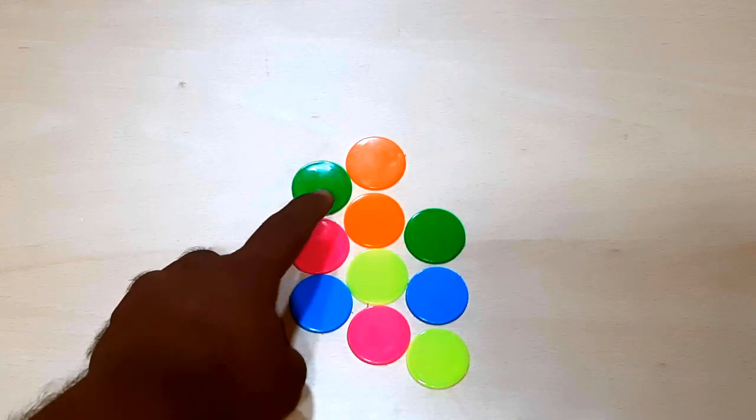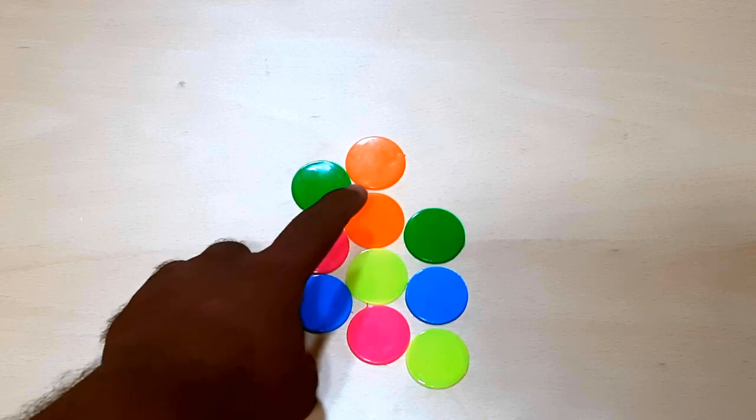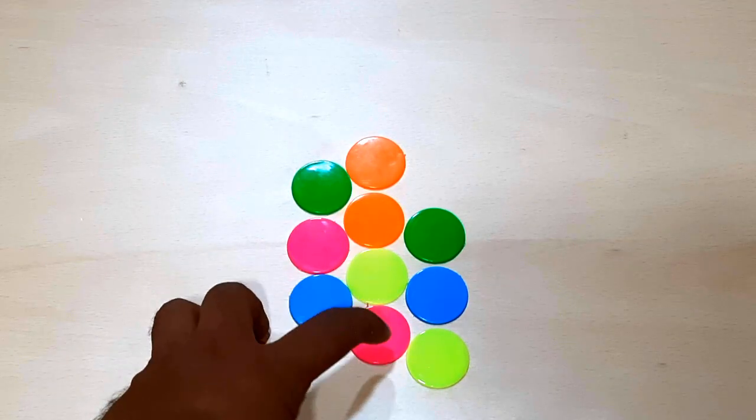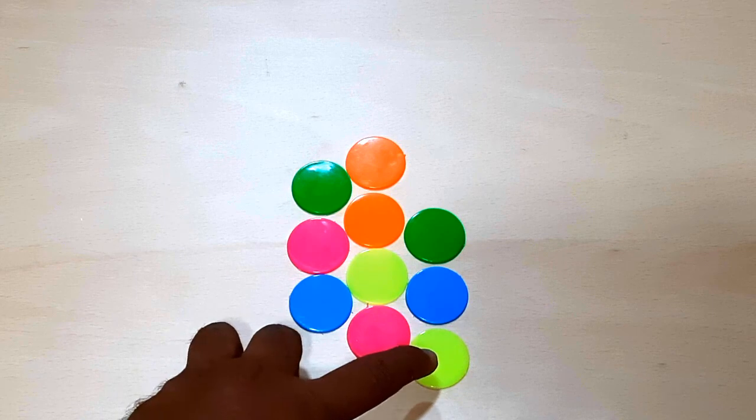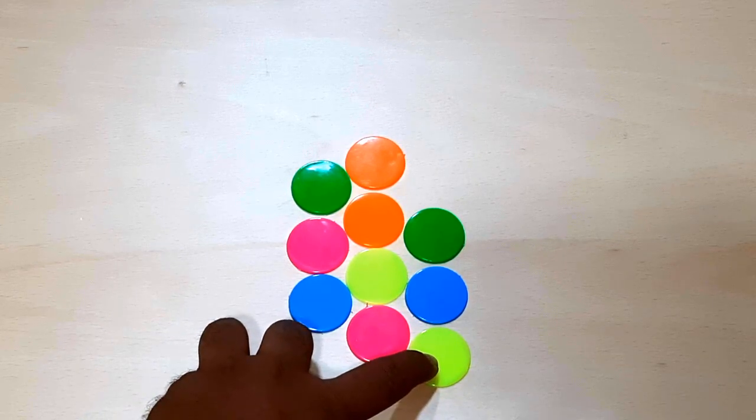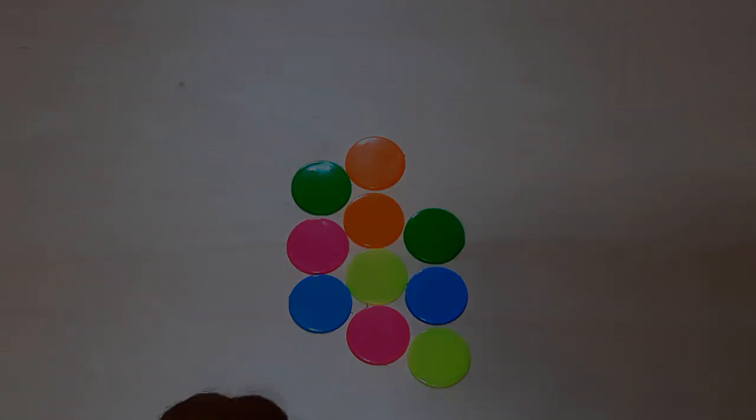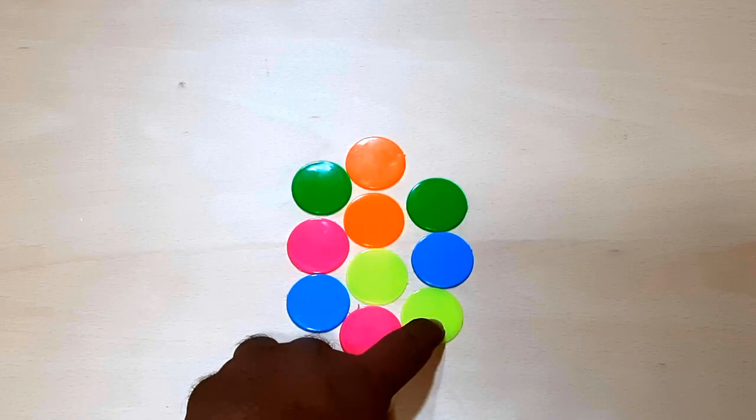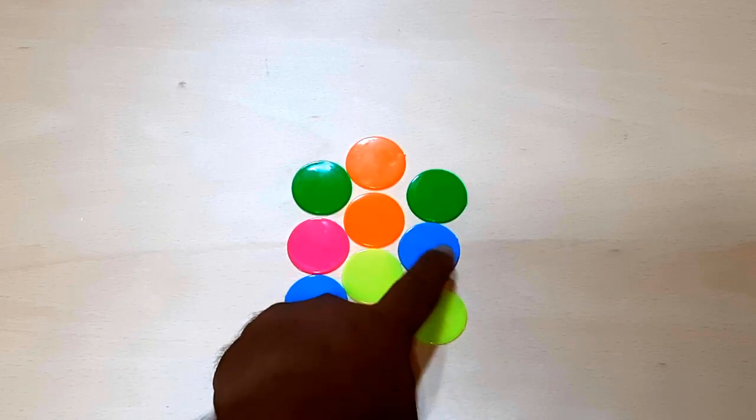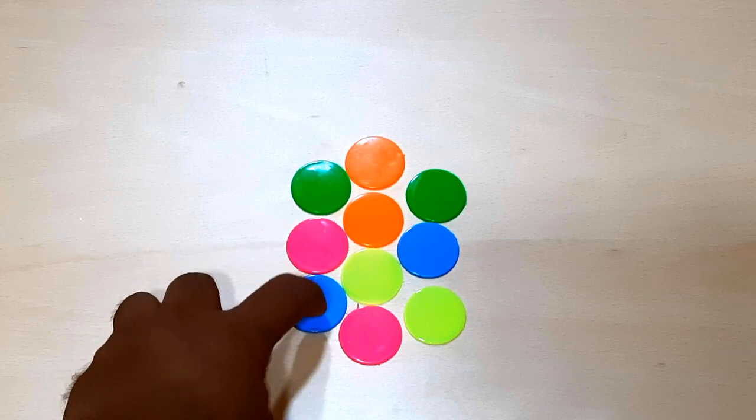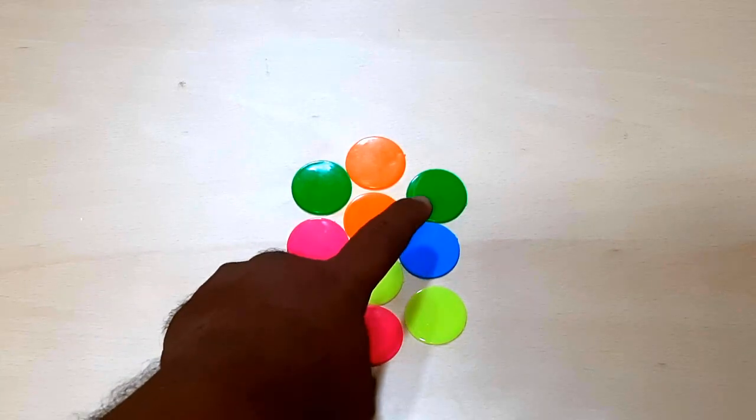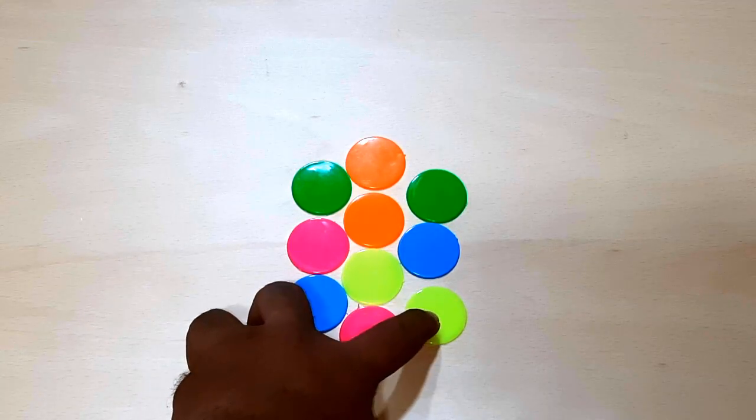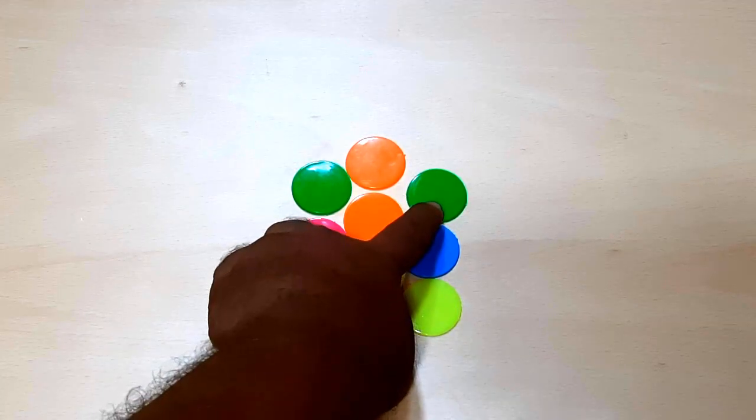1, 2, 3, 4, 5, 6, 7, 8, 9 and 10. Now we have 10 coins. Let's count one more time. 1, 2, 3, 4, 5, 6, 7, 8, 9, 10. Now we have 10 coins.